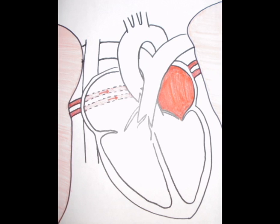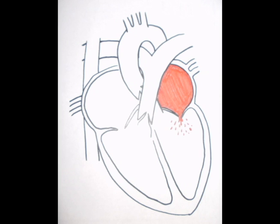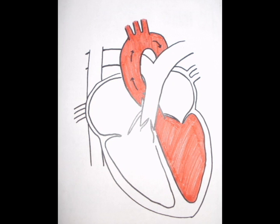The pulmonary veins take the oxygen-rich blood into your left atrium. Then it will travel through the left atrioventricular valve into the left ventricle. Next, blood will move up through the aortic valve into the ascending aorta, another tube similar to the pulmonary trunk but more posterior.